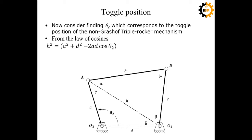Starting with the law of cosines for the first triangle — triangle o2-a-o4 — the equation is: x² = a² + d² − 2ad·cos(theta2), where theta2 is the known angle. Here x is the diagonal, and this is the standard law of cosines form: the square of one side equals the sum of squares of the other two sides minus twice their product times the cosine of the included angle.